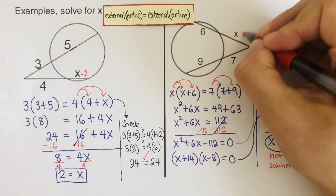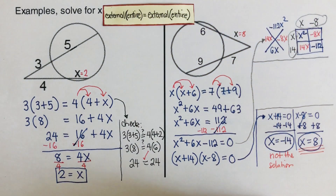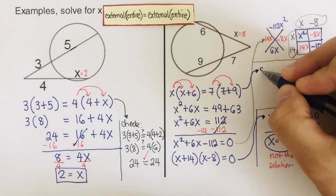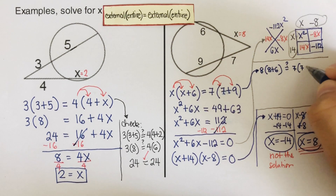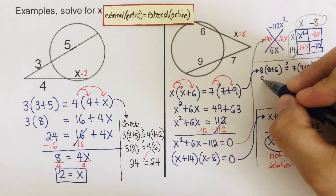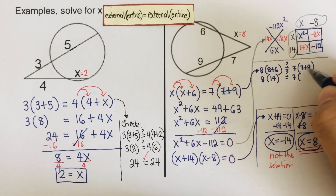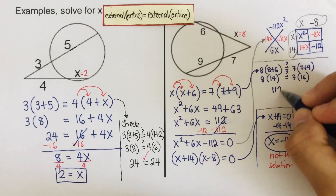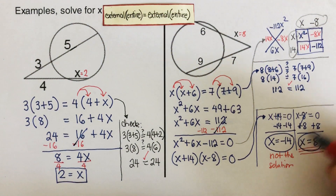Let's check: plug x = 8 back into the equation: 8 times (8 + 6) equals 7 times (7 + 9), so 8 times 14 equals 7 times 16, which gives 112 equals 112. Our answer x = 8 is confirmed correct.